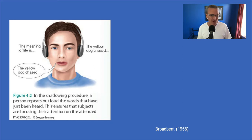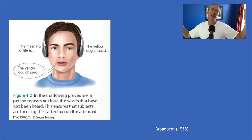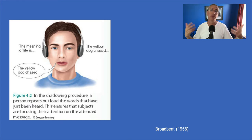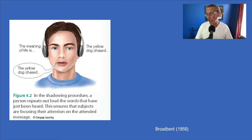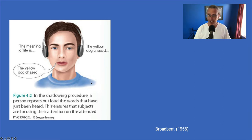That observation gave rise to the question of selective attention: how does the brain choose certain information to attend to, block out the other information, and does it completely block it out? To bring the cocktail party phenomenon into the lab — where there are multiple things going on but you want to focus on one — Broadbent developed what's called the dichotic listening task using the shadowing procedure.